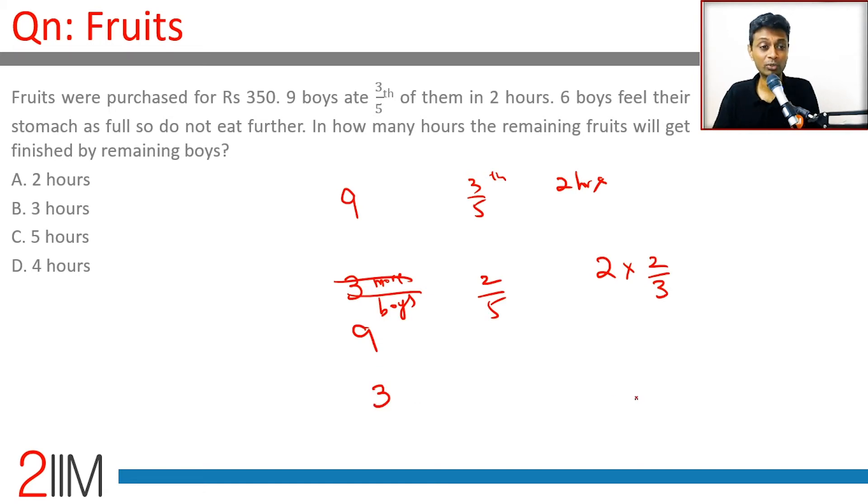Only 1/3 of our force is there, so how much time will it take? It will take 3 times as much time. Only 3 boys are eating, 6 boys have said okay, enough of bananas. So 4/3 × 3 = 4 hours.